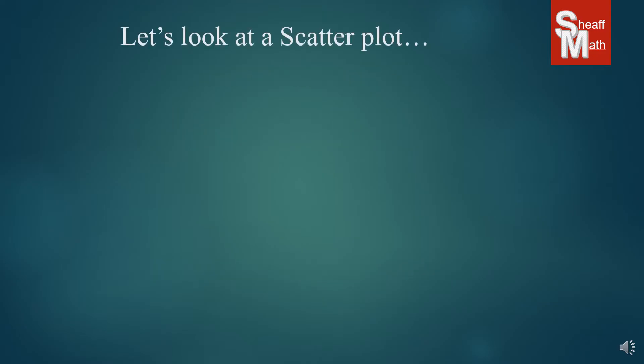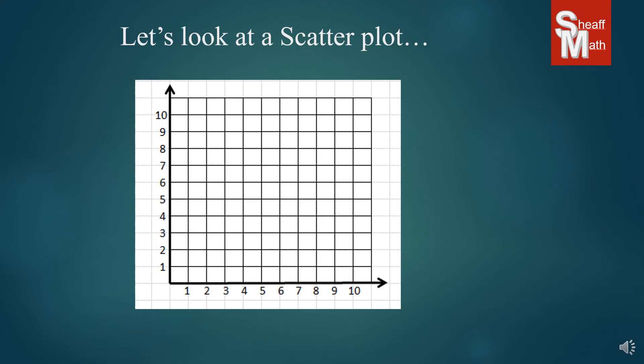So the first thing is we're going to take a look at what a scatterplot looks like. Most scatterplots are in the first quadrant of the XY coordinate plane, and so we mostly only deal with positive numbers when it comes to scatterplots, but you can go into the negative as well. We're going to be dealing with the first quadrant here.